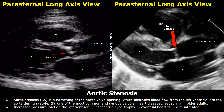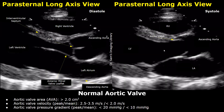In echocardiography, this is the aortic valve in the parasternal long axis view. You may find hyperechoic calcifications on the aortic valve leaflets. These images show the normal aortic valve in the parasternal long axis view. The image on the left is taken during diastole when the heart relaxes — the aortic valve is seen closed. The image on the right is taken during systole and the aortic valve is opened.